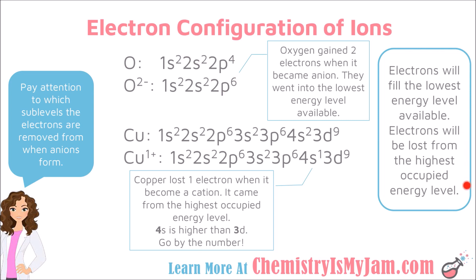Electrons will be lost from the highest occupied energy level — you need to look at the largest principal quantum numbers. Copper, for example, ended in 4s2, 3d9. When copper becomes an ion and loses one electron, because 4 is higher than 3, copper loses an electron from the 4s rather than the 3d. So you can't just go by which sublevel is written last — you need to look at which has the higher energy level when electrons are being lost.